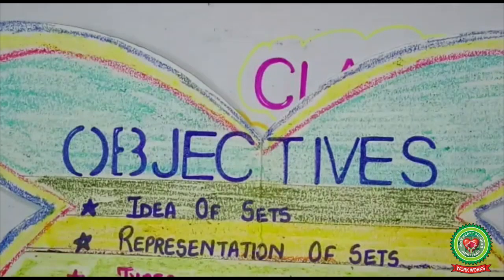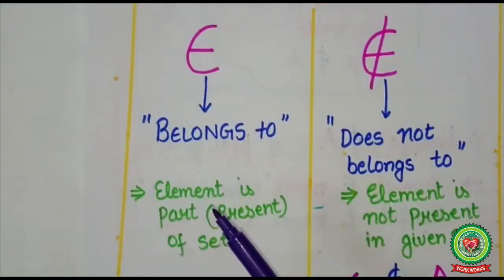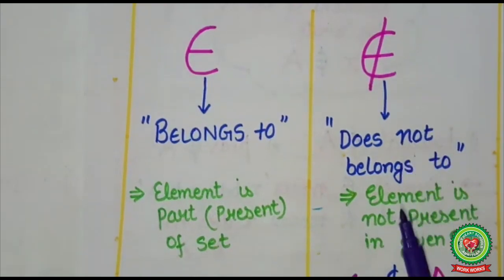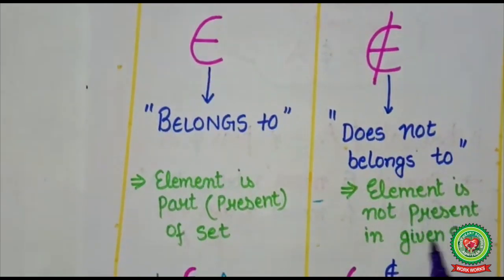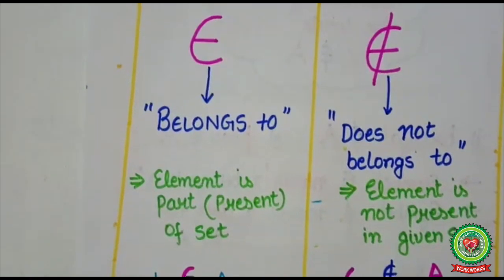Today we will continue with belongs to and doesn't belong to symbols, that is a subtopic of set. This symbol represents belongs to, which implies element is part of given set, that means element is present in given set. And this symbol represents doesn't belong to, which implies element is not present in given set.